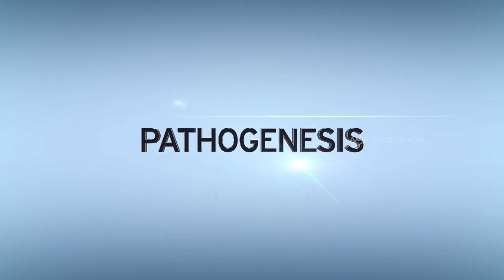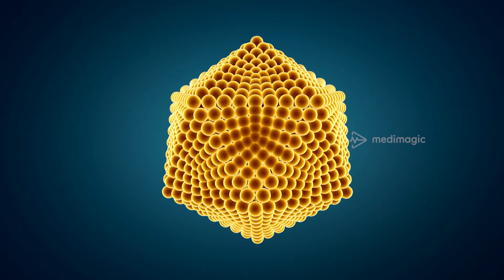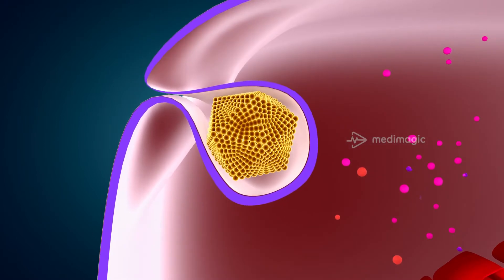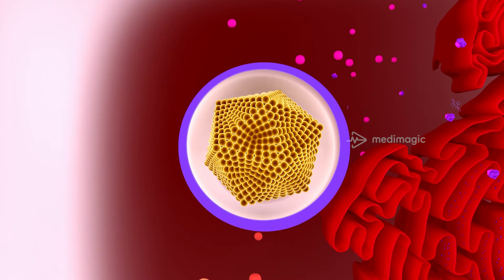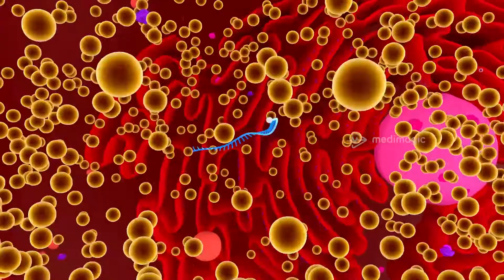Pathogenesis. HAV binds with receptors of hepatocytes and enters the cell by endocytosis. Once in the cytoplasm, it sheds off its outer coat, leaving ssRNA alone.